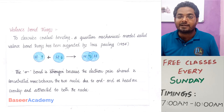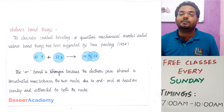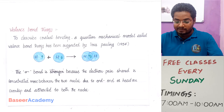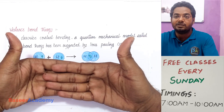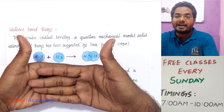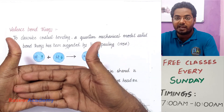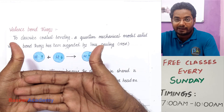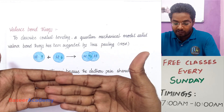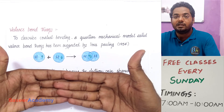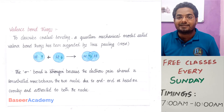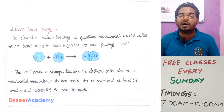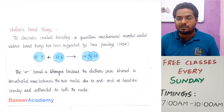The overlap along the internuclear axis gives a stronger sigma bond, while the overlap that happens sideways gives a weaker pi bond. To understand this, consider my two palms as two orbitals. If the orbitals overlap end to end, the bond formed is known as a sigma bond. The extent of overlap decides the strength of the bond — more overlap means a stronger bond, less overlap means a weaker bond. The bond formed by overlapping orbitals along the internuclear axis, end to end or head-on, is known as a sigma bond.